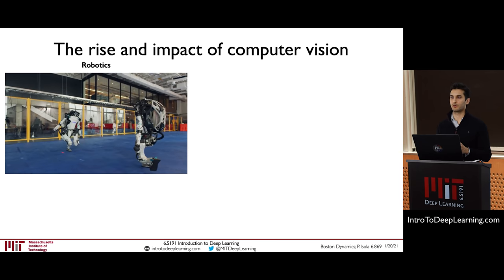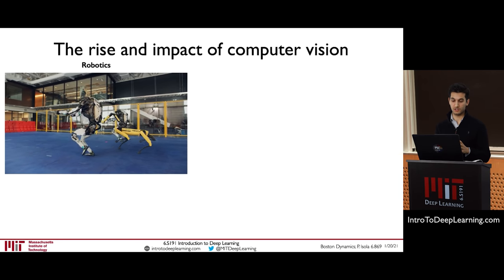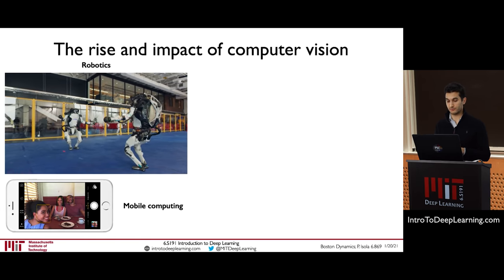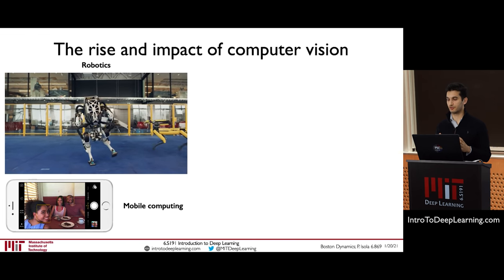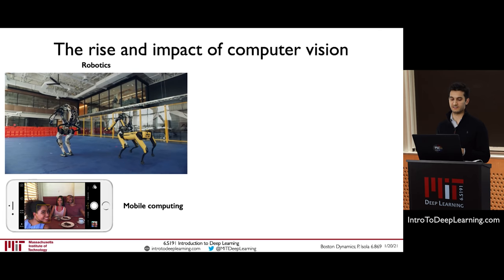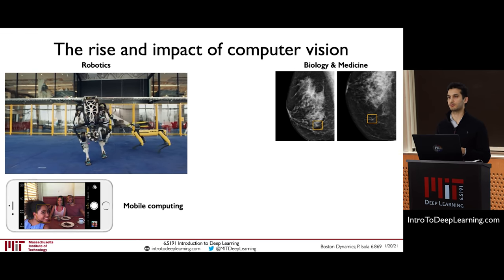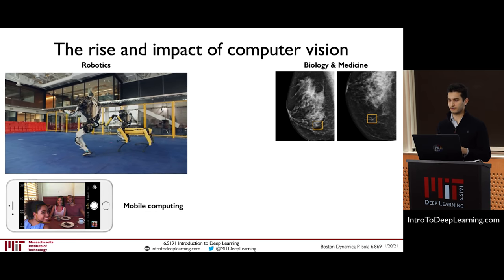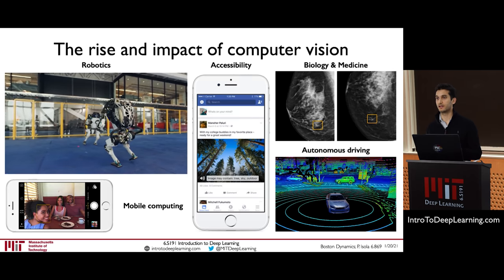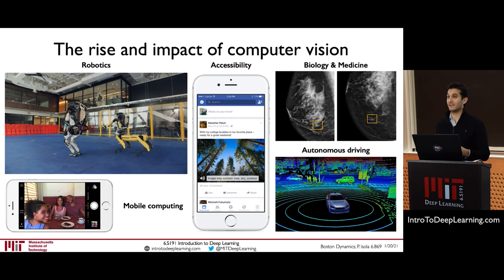Deep learning is bringing forward an incredible revolution in computer vision algorithms and applications, ranging from allowing robots to use visual cues for navigation, to algorithms now compressed enough to run in our pockets on our phones for processing photos, detecting faces, and greater convenience. We're also seeing exciting applications in biology and medicine for detecting cancer, in autonomous driving, and also in accessibility to aid the visually impaired.